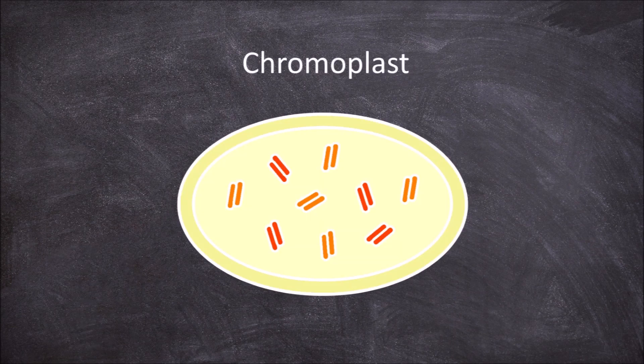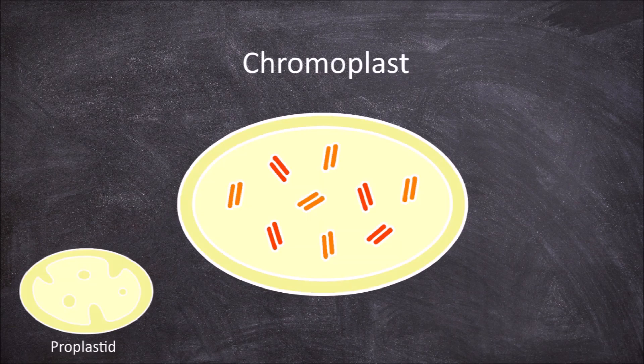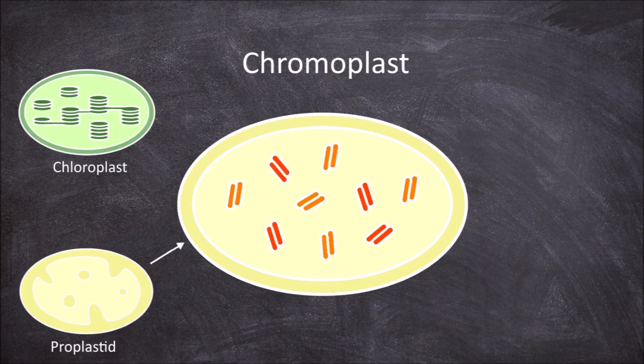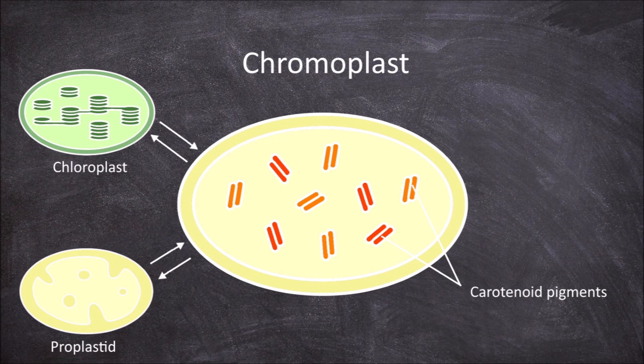The next type of plastid is the chromoplast. Chromoplasts are formed from proplastids and chloroplasts. Both of these processes can be reversible. Chromoplasts contain carotenoid pigments, which create yellow, orange, and red pigments. Chromoplasts are often found in flowers, fruits, and leaves during autumn.